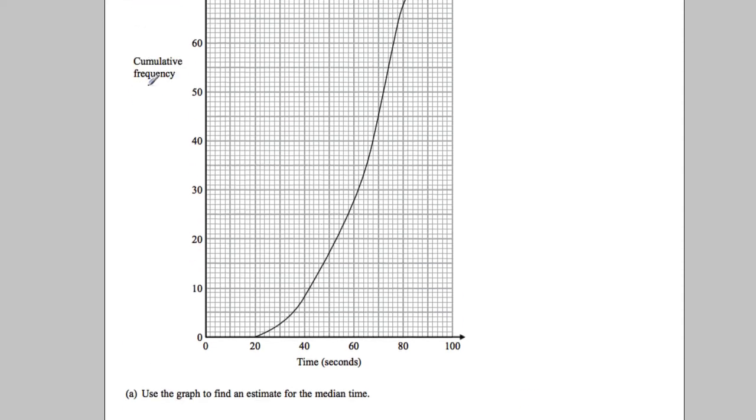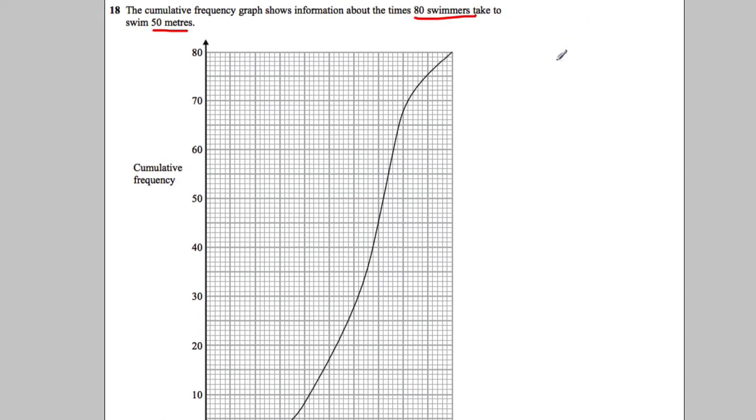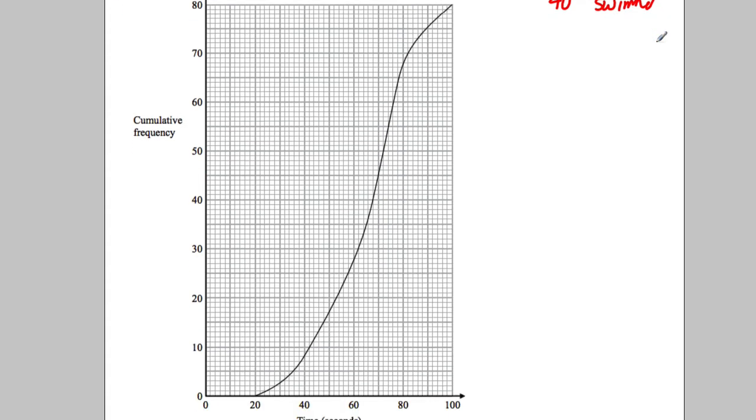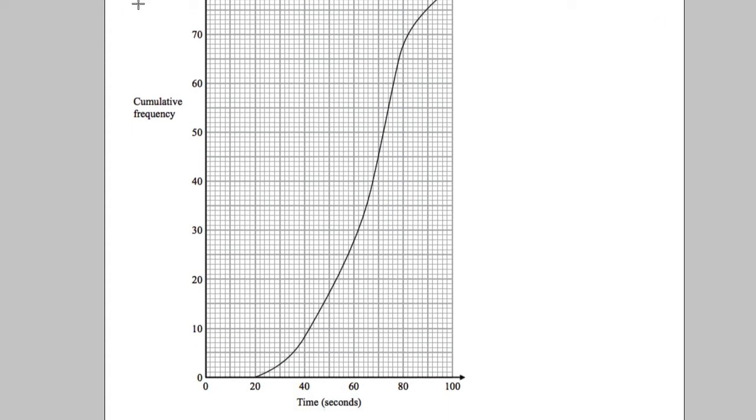Use the graph to estimate the median time. Well, if there are 80 swimmers, the median happens at about the 40th swimmer. Okay, so what we need to do is go along our cumulative frequency at 40. So we go along at 40.